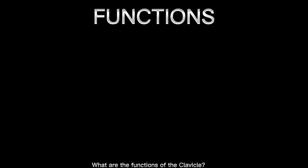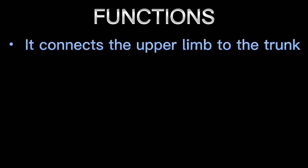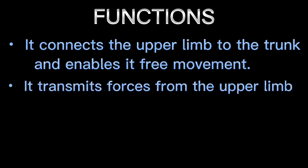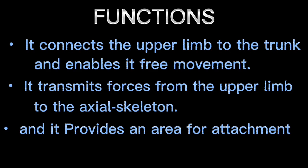What are the functions of the clavicle? It connects the upper limb to the trunk and enables its free movement. It transmits forces from the upper limb to the axial skeleton and provides an area for attachment of muscles.